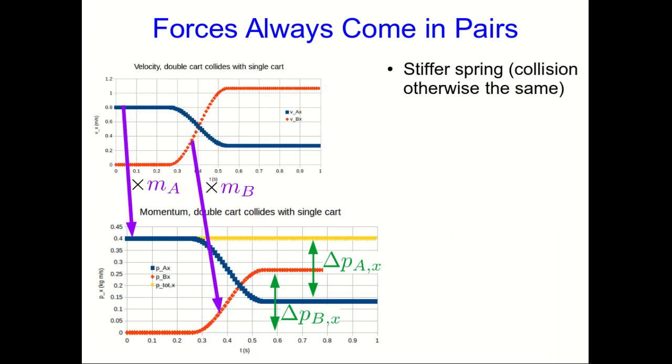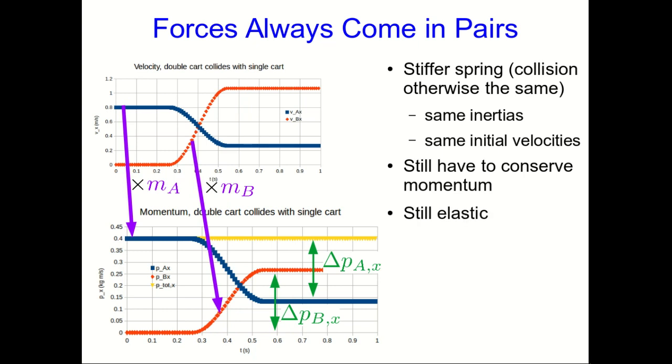Let's think about a stiffer spring. So the collision is going to be exactly the same other than that the soft spring has been replaced with a stiffer one. So in particular, the inertias of these carts are the same, and their initial velocities were the same. Well, we still have to conserve momentum. And if you look, these collisions have been elastic, so I'm going to leave it elastic. And so we have to have the same final velocities.